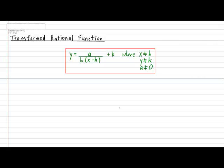Before we go further I'd like to explain the restrictions on the transformed rational function. Let's start with the fact that x cannot equal h. If you think about it carefully, if x were allowed to be the same value as h it would produce a denominator of zero. And as we all know in a fraction you cannot have a denominator of zero.